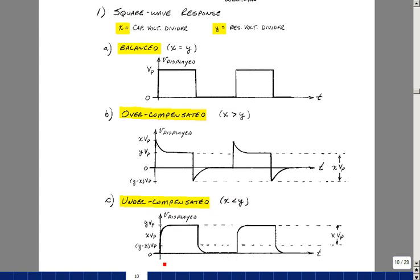If you have the resistive voltage divider larger than the capacitive voltage divider, then on the rising edge again we'll get a division but it won't be as big as what we get from the resistive divider. So we'll get these rounded edges which you call undercompensated and then overcompensated.